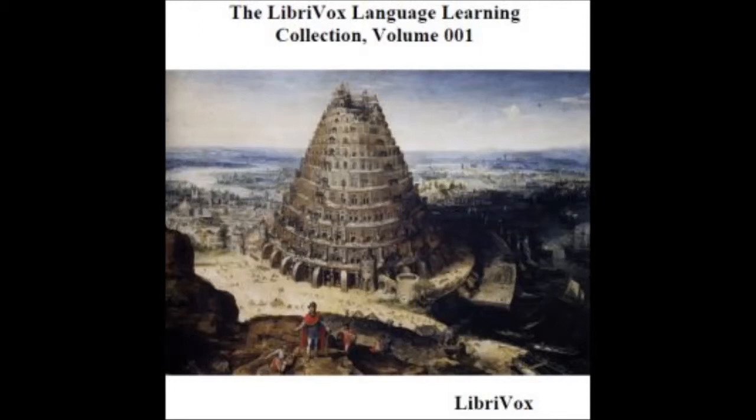J consonant sounds uniformly like the soft G, and is therefore a letter useless except in etymology, as ejaculation, jester, jocund, juice. K has the sound of hard C, and is used before E and I, where, according to English analogy, C would be soft, as kept, king, skirt, skeptic — for so it should be written, not sceptick, because SC is sounded like S, as in scene.